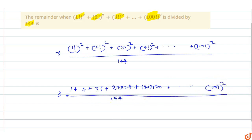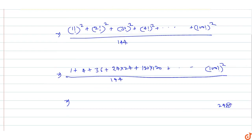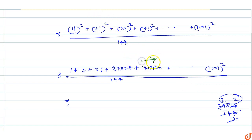Now, we know that 24 into 24 equals 576, which is divisible by 144, so the remainder is zero. This means 4 factorial squared and all higher factorial squares are divisible by 144, giving remainder zero. So from the 4th term onwards, all terms contribute zero remainder.